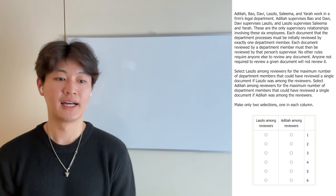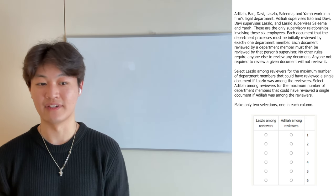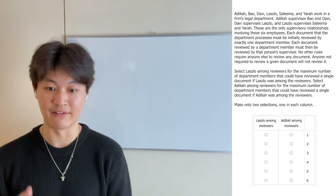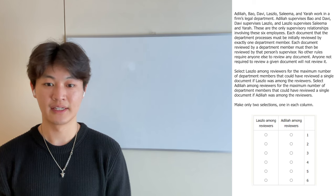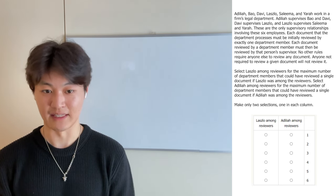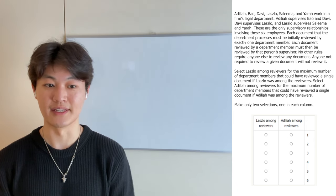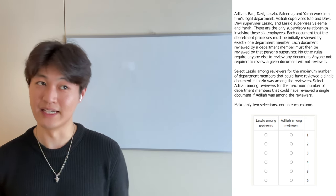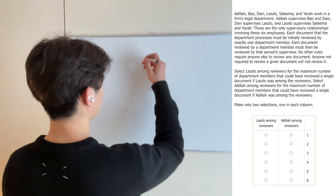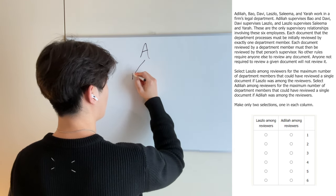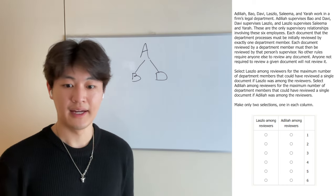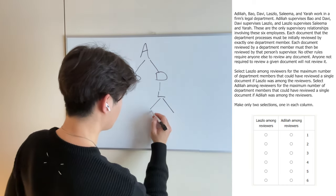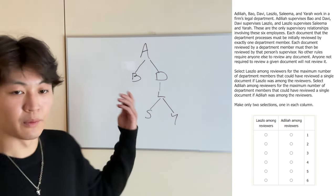Adilia, Bao, David, Laszlo, Salim, and Yarra work in a firm's legal department — that's six people. Adila supervises Bao and David; David supervises Laszlo; and Laszlo supervises Salim and Yarra. These are the only supervisory relationships involving these six employees. It would be quite prudent to graph out this sort of hierarchy. So we have Adila who supervises Bao and David, then David who supervises Laszlo, and then Laszlo supervises Salim and Yarra at the bottom. We have our organizational hierarchy.